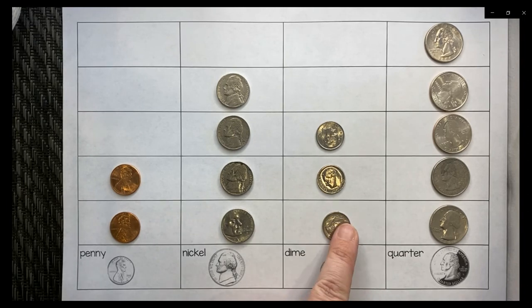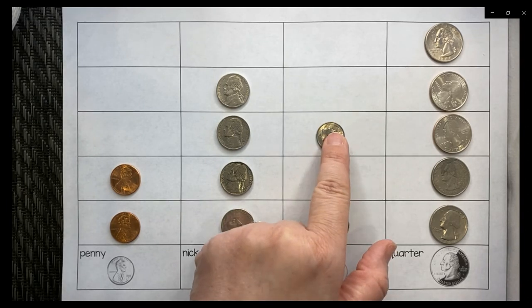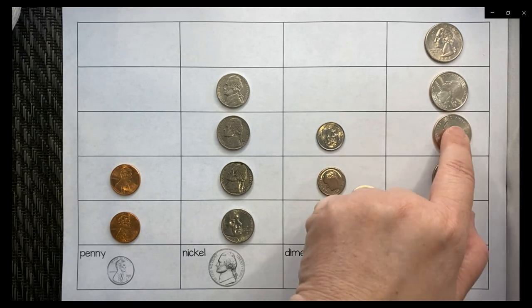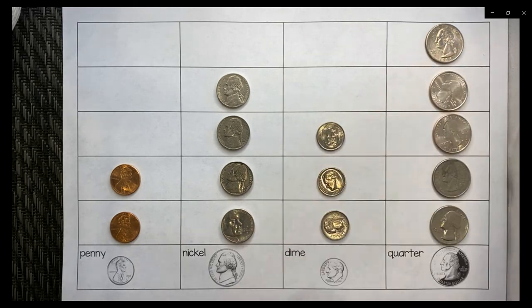I have one, two, three dimes. Three dimes. One, two, three, four, five. I have five quarters.